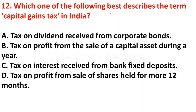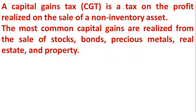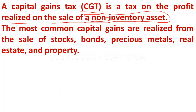Question twelve: which best describes capital gains tax in India? Option B — tax on profit from the sale of a capital asset during a year — is the right answer. Capital gains tax (CGT) is a tax on the profit realized on the sale of non-inventory assets such as stocks, bonds, precious metals, real estate, and property.